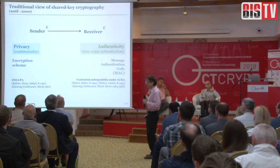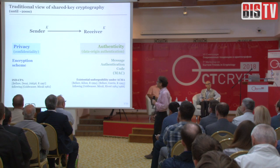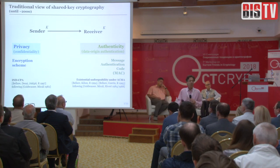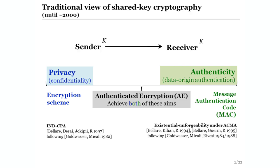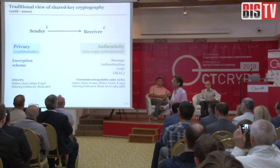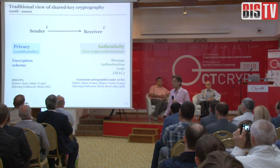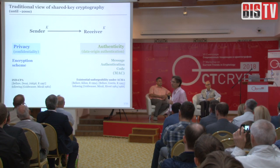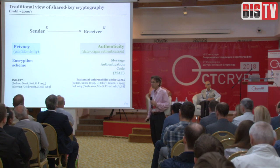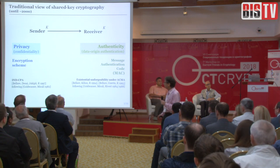The conventional view of symmetric cryptography is that it concerns two principal goals. The first is providing privacy and the second is providing authenticity. Each of these goals has its associated tools and definitions. Privacy is normally provided by symmetric encryption schemes and authenticity by message authentication codes.